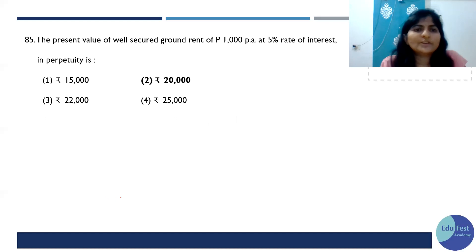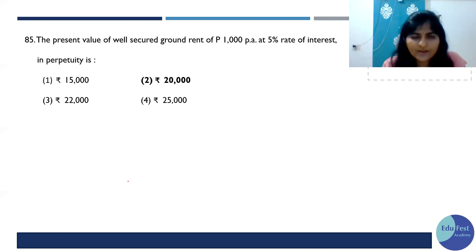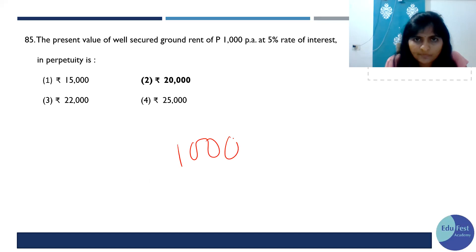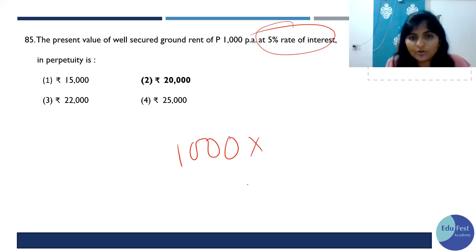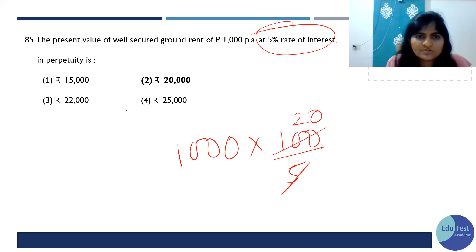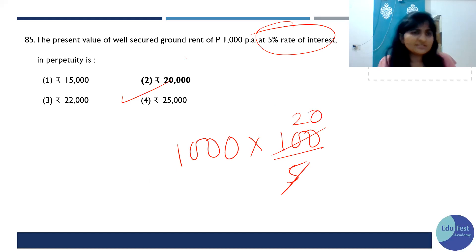The present value of a well-secured ground rent of ₹1,000 per annum at a 5% rate of interest in perpetuity. Look: ₹1,000 with a 5% rate of return — so 1,000 divided by 5% = 1,000 × (100/5) = 20,000. So the answer is ₹20,000. Very simple mathematics.